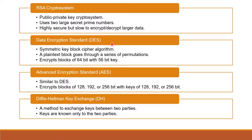Next is DES, a symmetric block cipher algorithm that encrypts plaintext blocks of 64 bits through a series of permutations. Next is AES, which is similar to DES except that it encrypts higher bit blocks with higher bit keys. Therefore, AES is in theory more secure than DES. And next is DH, the Diffie-Hellman Key Exchange Protocol. It is a method to exchange keys between two parties. It is not exactly a cryptosystem, but it is very important in cryptosystems where keys are used for decryption.